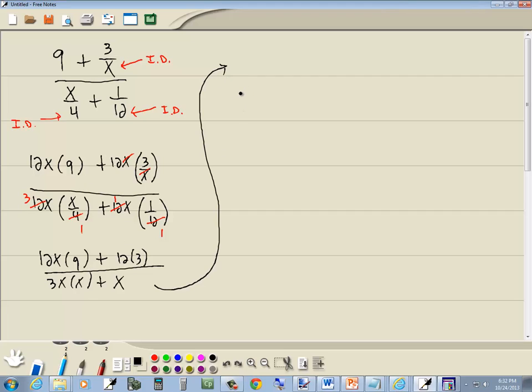12 times 9 is 108. So it gives us 108x, plus 12 times 3 is 36, over 3x times x is 3x squared, plus x.